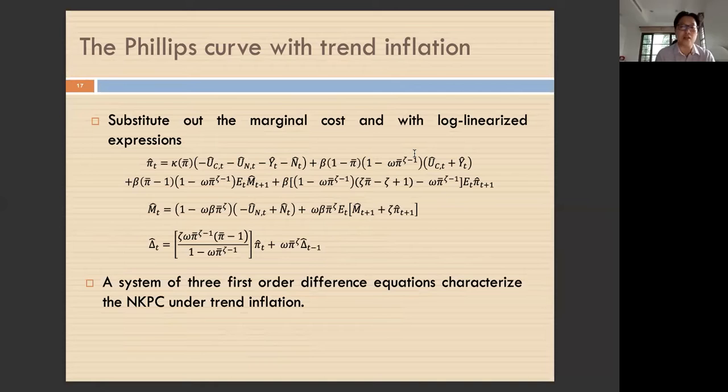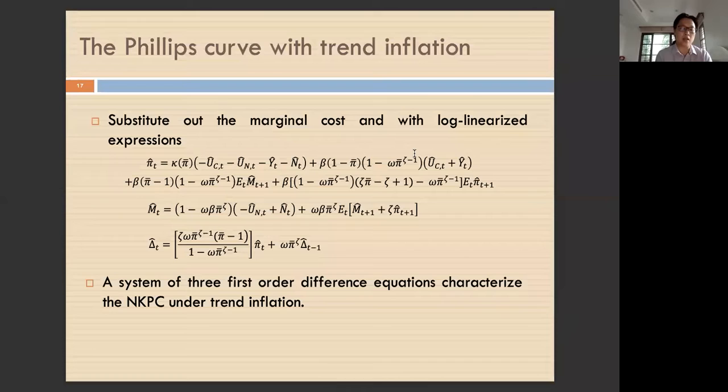The Phillips curve is more complicated when we put trend inflation in the model. If there is no trend inflation, the Phillips curve is simple — as studied in undergrad or graduate levels. But with trend inflation, the Phillips curve is more complicated, composed of three equations: π̂_t, m̂_t (forward-looking marginal cost), and δ̂_t (a first-order difference equation in price dispersion). We have a system of three first-order difference equations characterizing the New Keynesian Phillips curve under trend inflation.